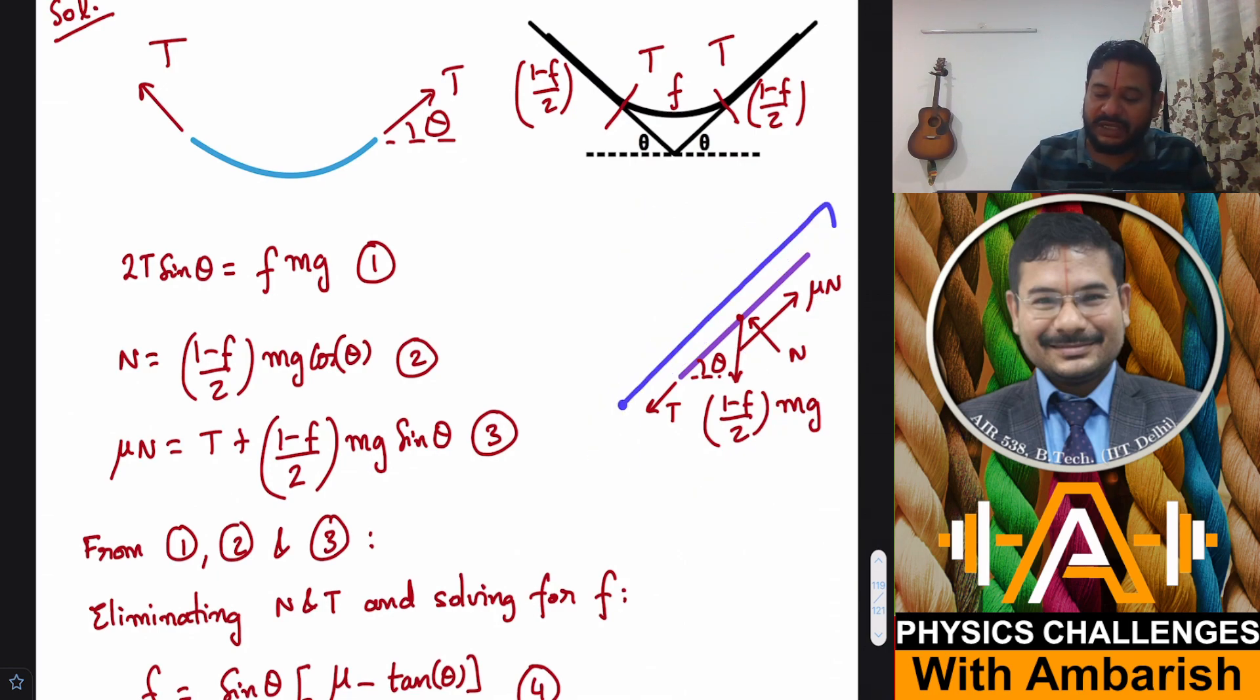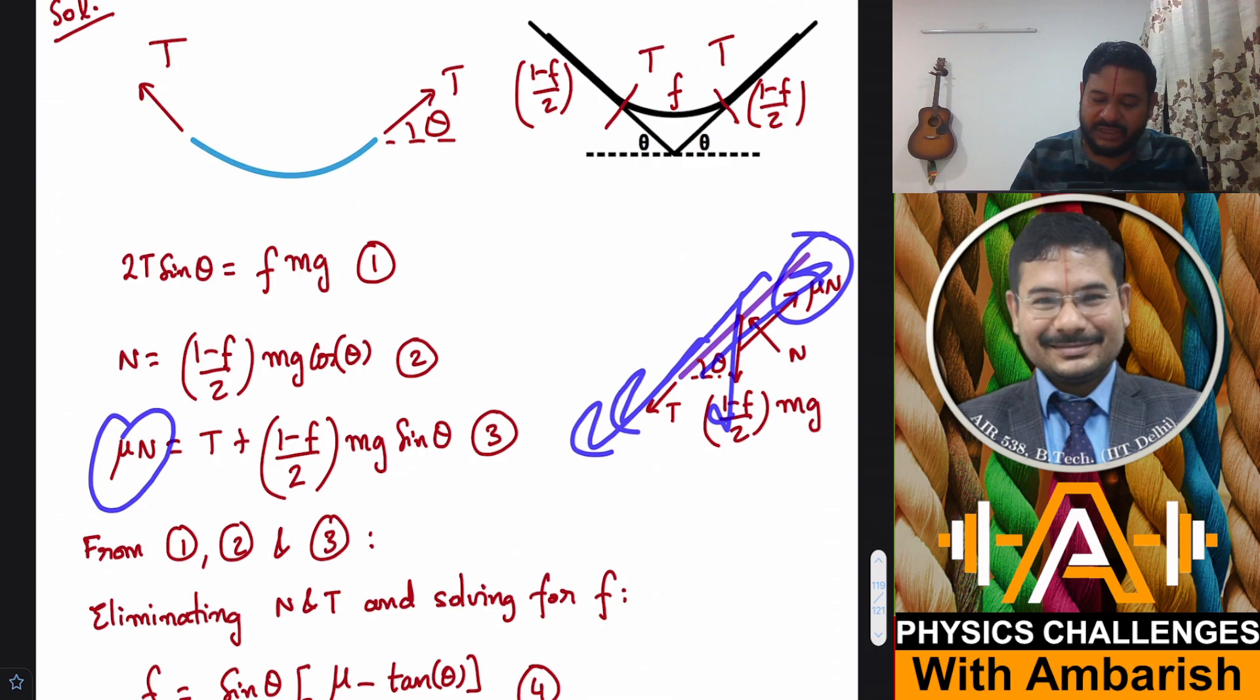If we consider the force balance in this direction, normal reaction N should be equal to 1 minus f by 2 into mg cos theta. This is 1 minus f by 2 mg, and this becomes 1 minus f by 2 mg cos theta. Now what about force balance in this direction? Upward force is mu N and downward force is T plus mg sin theta, so T plus 1 minus f by 2 mg sin theta.